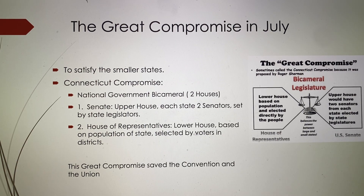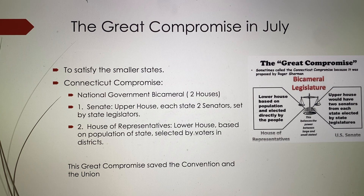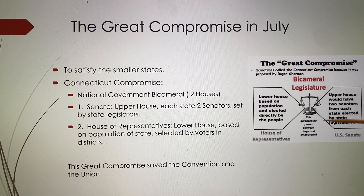This was the Great Compromise, and it saved the convention and saved the Union of the United States. The smaller states were satisfied with two senators each in the upper house, while the House of Representatives would be by population, by the people. They agreed, and this balanced everything out. The Connecticut Compromise, or Great Compromise, was so important.